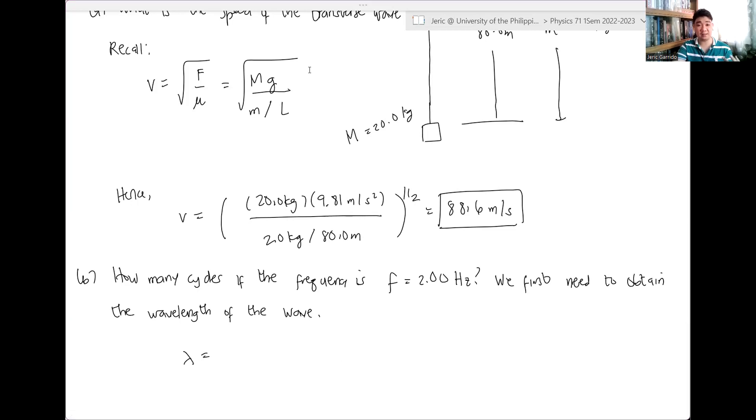Yes, the wavelength can be obtained from the wave speed or wave velocity and the frequency. So, lambda is V over F, which is, again, 88.6 meters per second divided by 2.00 hertz. This is also per second. Therefore, the units of wavelength is in meters. And from there, one can show that this is actually 44.3 meters.